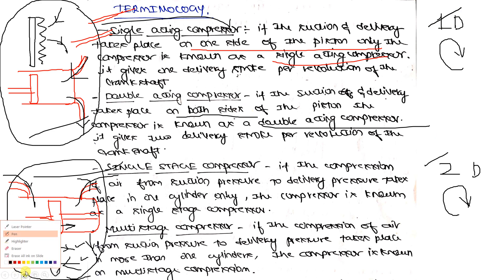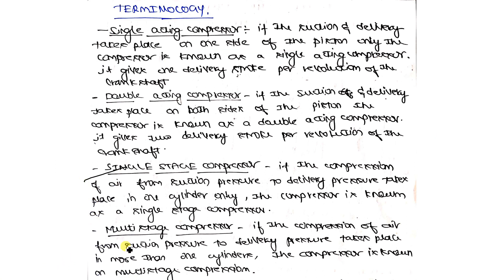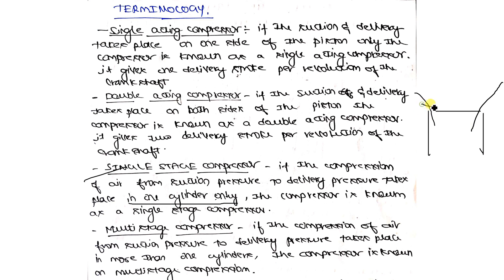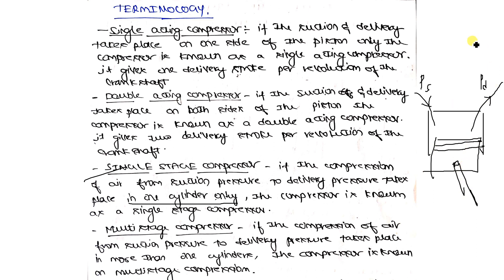Next is the single stage compressor. If compression of air from the suction pressure PS to delivery pressure PD takes place in a single cylinder only, then it is known as a single stage compressor. Your normal compressors would be single stage — the suction pressure PS and delivery pressure PD are both obtained within the single cylinder itself.